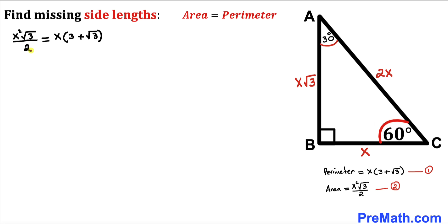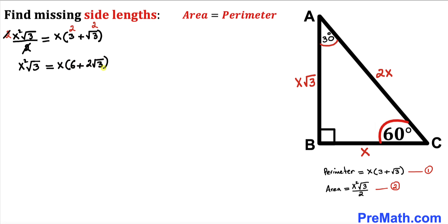Let's remove the fraction by multiplying both sides by 2. On the left side the 2s cancel, giving us x squared times square root of 3. On the right side we get x times (6 plus 2 times square root of 3).